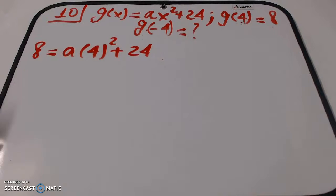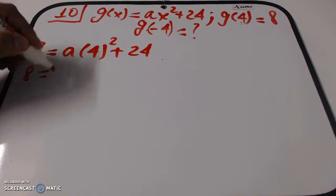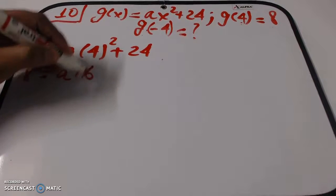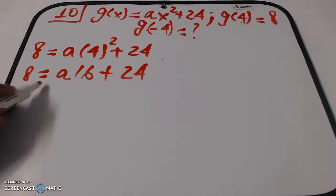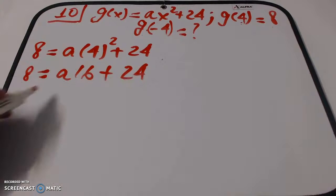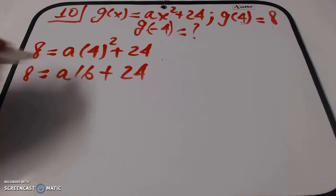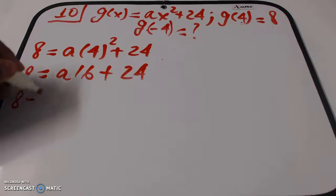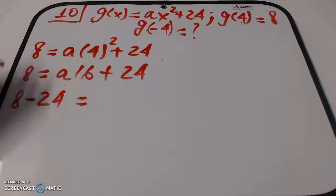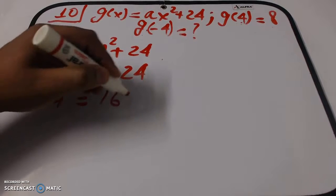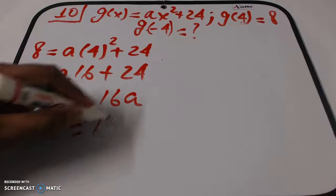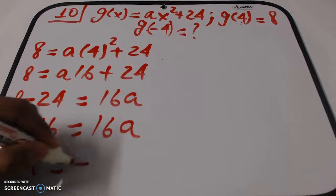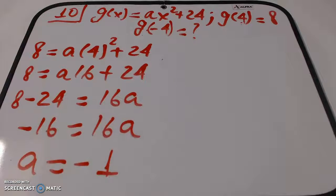4 squared is 16, so this is a times 16 plus 24. Do not add 24 plus 16 because we need to solve for a. So 8 - 24 = 16a. 8 minus 24 equals -16, so -16 = 16a, which means a = -1. We have solved the first step, finding a.